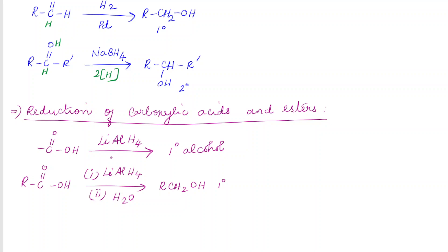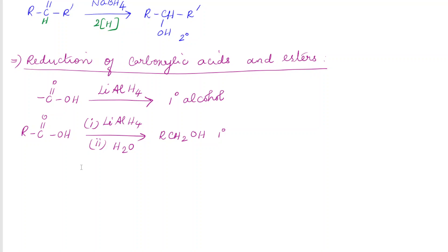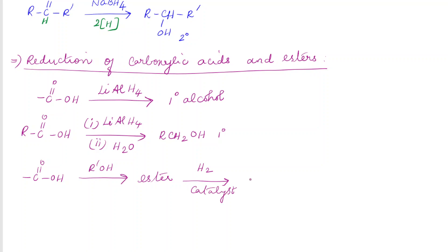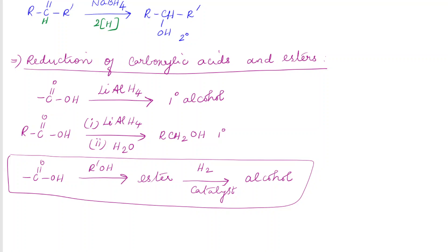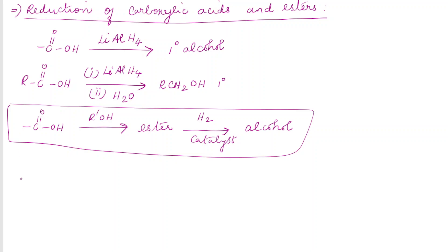However, commercially we cannot use this method for preparing alcohol from carboxylic acid because lithium aluminium hydride is a very expensive reducing agent. So we generally follow an alternative method: first, the carboxylic acid is converted into an ester by treating it with an alcohol. This ester is then subjected to catalytic hydrogenation to produce an alcohol. This is how alcohol is prepared commercially from carboxylic acid.